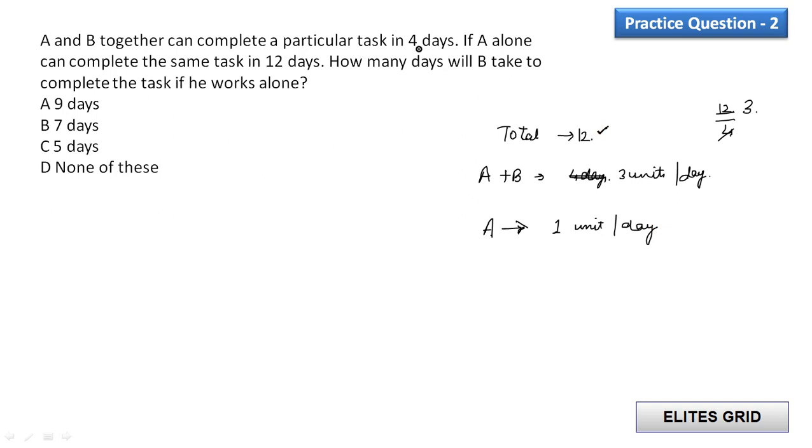If they are taking together 4 days then it simply means that 3 units per day will be for A plus B. Now if only A takes 12 days to complete the task then it will be 1 unit per day for A only. So what about B? If A plus B is equal to 3 units per day and only A is equal to 1 unit per day, then only B will be equal to 2 units per day. Simple thing, it is not difficult.